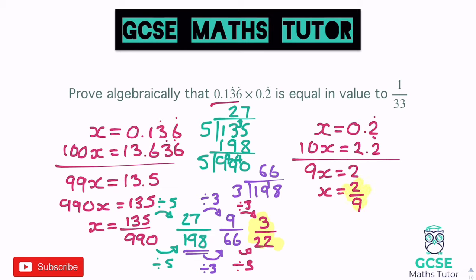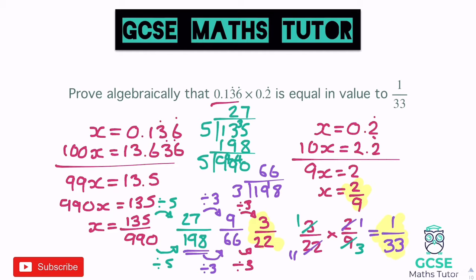Now we multiply the two fractions together: 3 over 22 multiplied by 2 over 9. We can do some cross-cancelling: divide the 3 and 9 by 3, giving 1 and 3; divide the 2 and 22 by 2, giving 1 and 11. So 1 times 1 on the top is 1, and 3 times 11 on the bottom is 33. There's our answer: 1 over 33. With a lot of working out and steps of simplifying, just be very careful with simplifying your fractions as you go through.